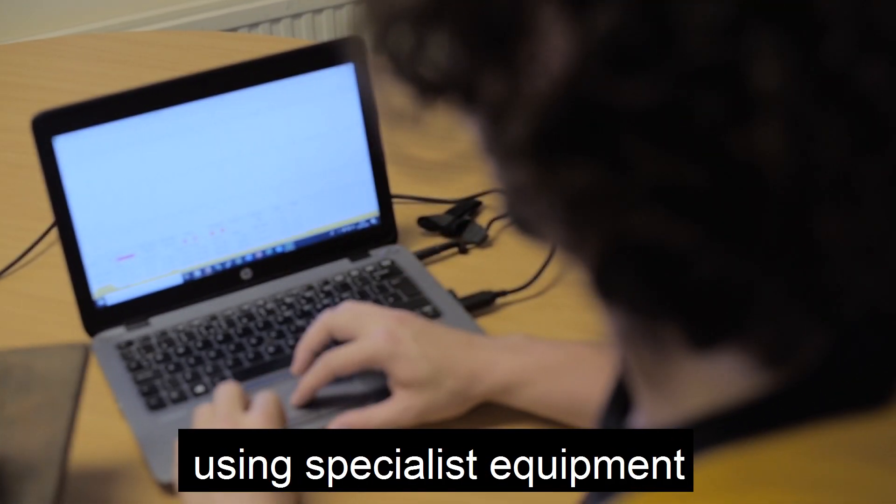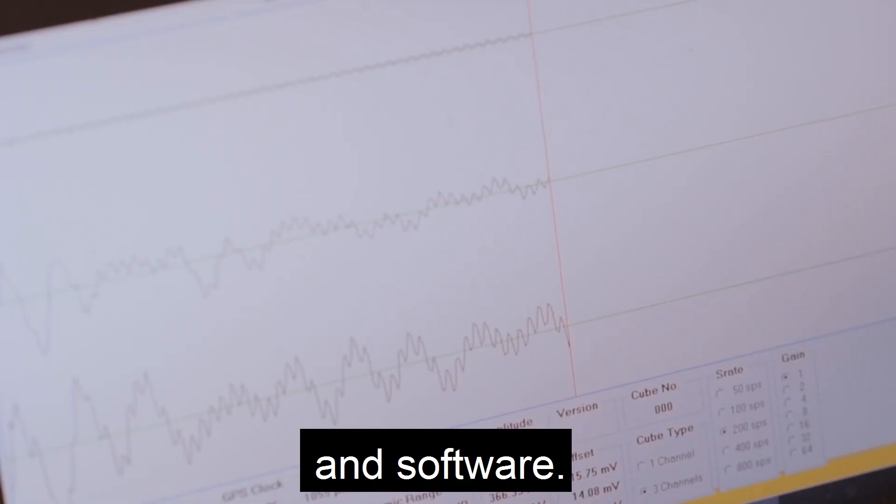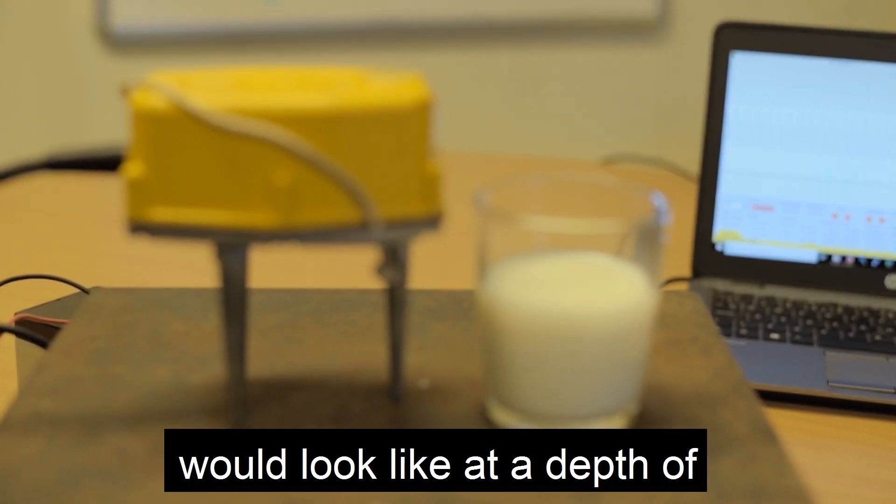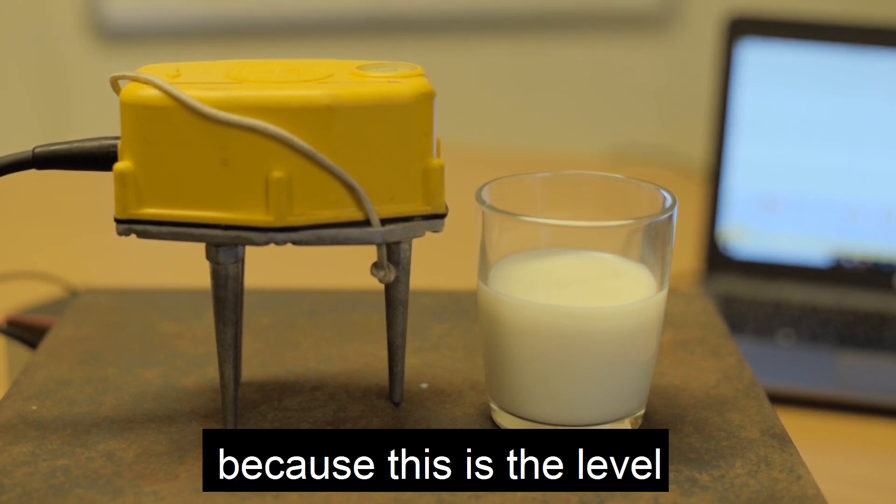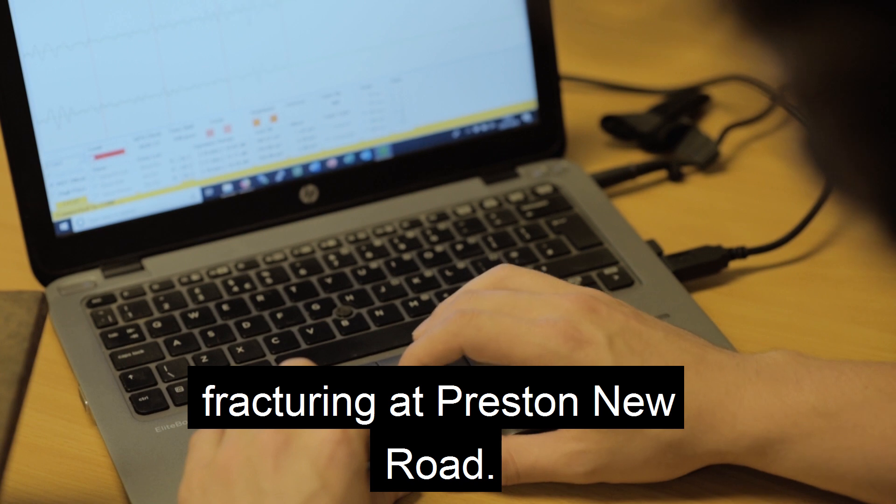The scientists at Liverpool University measured this using specialist equipment and software. So this is what a 1.6 would look like at a depth of 2.1 kilometres. The depth is important because this is the level we are working at when we are fracturing at Preston New Road.